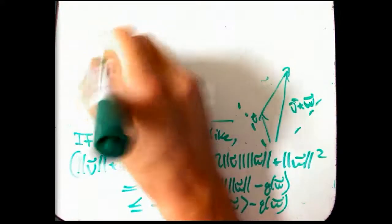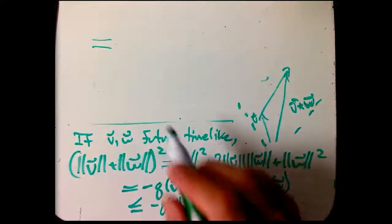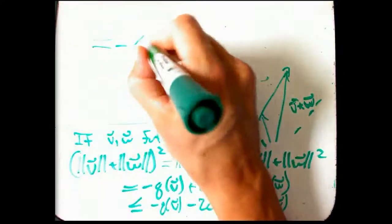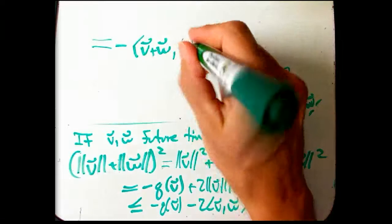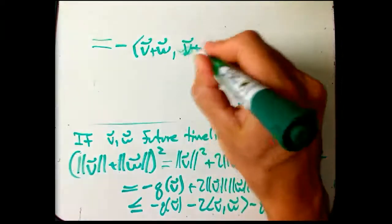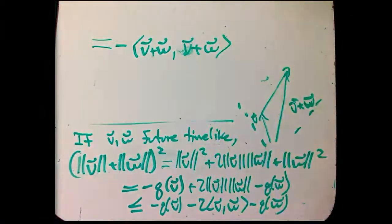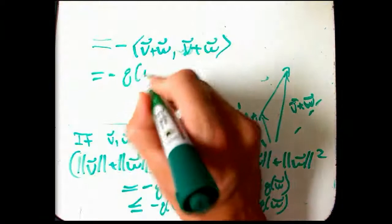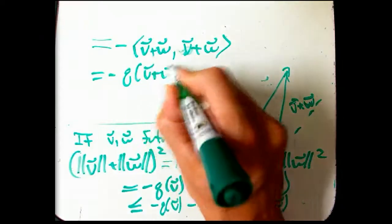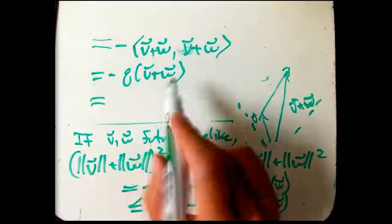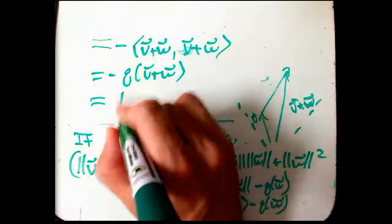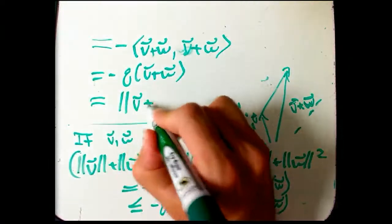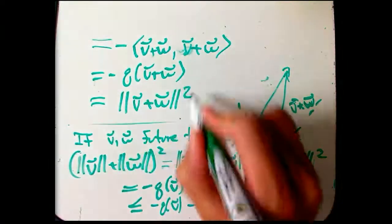And so, that's going to be equal to minus the scalar product of V, whoops, V plus W, with V plus W, okay, or minus Q of V plus W. But, if I take this with itself, and I take a minus, that's just the magnitude, because it just makes it plus. And we're done.